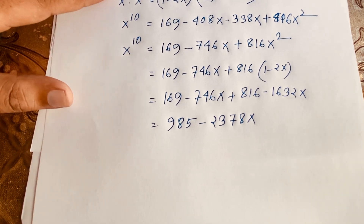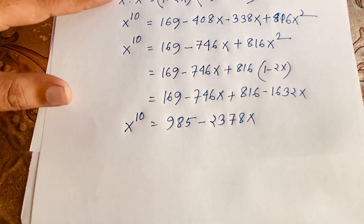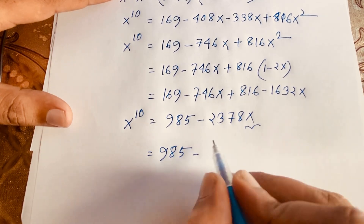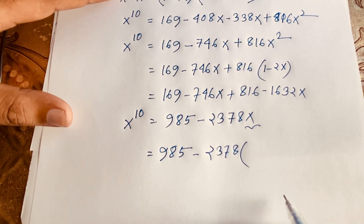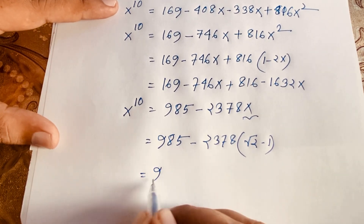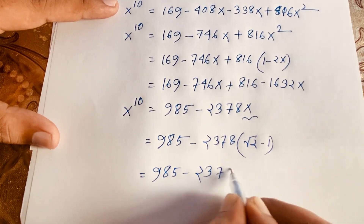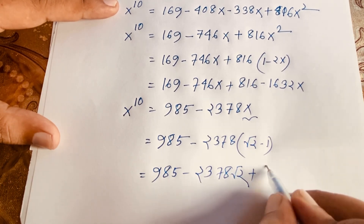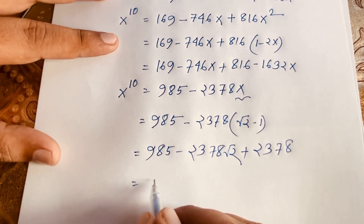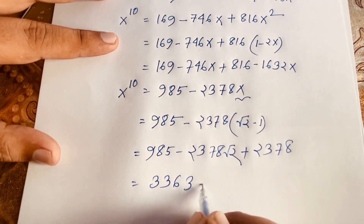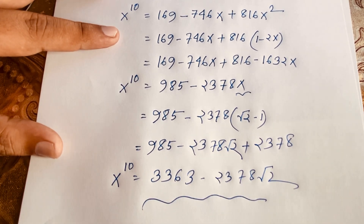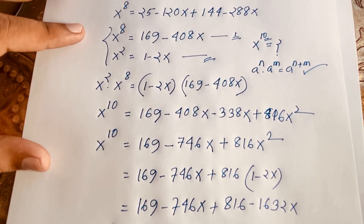Now substituting x = √2 - 1: x^10 = 985 - 2378(√2 - 1) = 985 - 2378√2 + 2378 = 3363 - 2378√2. This is our final answer. Thank you all. If you enjoyed this video, please subscribe to our channel for other interesting videos. Goodbye, take care.